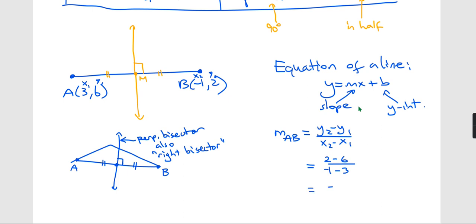Now we can figure this out. This is negative 4. Negative 1 minus 3 is also negative 4. Oh, nice. My slope is 1.